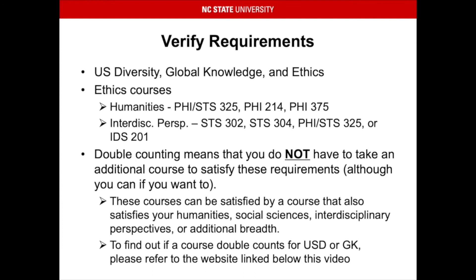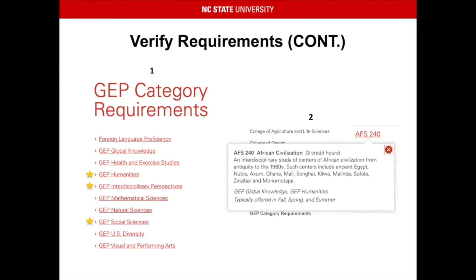To find out if a course double counts for US diversity or global knowledge, please refer to the website linked below this video. When you open that webpage, you will see a list — the starred parts are the GEP requirements that can double count with US diversity, global knowledge, or ethics. When you open the respective pages, you will see a list of courses that satisfy each requirement. For example, if you open up the humanities page, you will see a list of courses. If you click on any of those course codes, for example AFS 240, as shown under number 2, you will see if that specific course will double count. AFS 240 will double count for Global Knowledge and Humanities. You will also be able to see the semesters in which that course is usually offered.